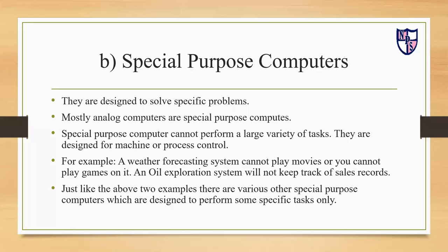For example, a weather forecasting system cannot play movies or games, and an oil exploration system will not keep track of sales records. Special purpose computers are only used for a specific purpose — a weather forecasting system is only for weather forecasting, and an oil exploration system is only for oil exploration data. Just like these examples, there are various other special purpose computers designed to perform only one specific task.